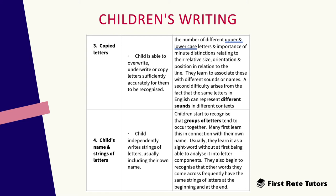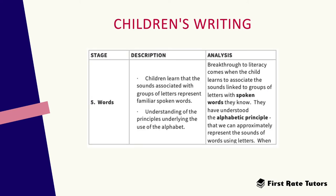The fourth stage involves the child's name and stringing together letters. Children start to independently write strings of letters, usually including their own name. They start to recognise that groups of letters tend to occur together — many first learn this in connection with their own name, usually as a sight word without being able to analyse it into letter components. Children also begin to recognise that words they encounter frequently have similar strings of letters at the beginning and at the end.